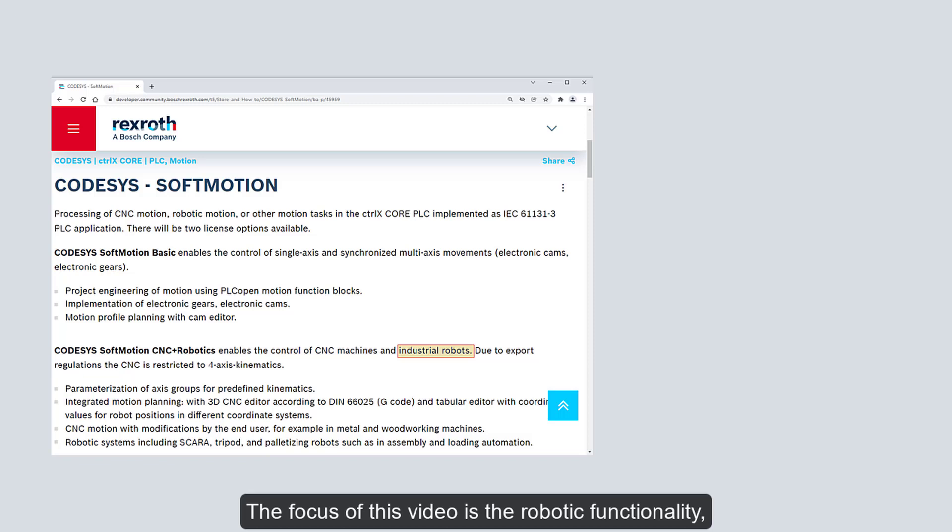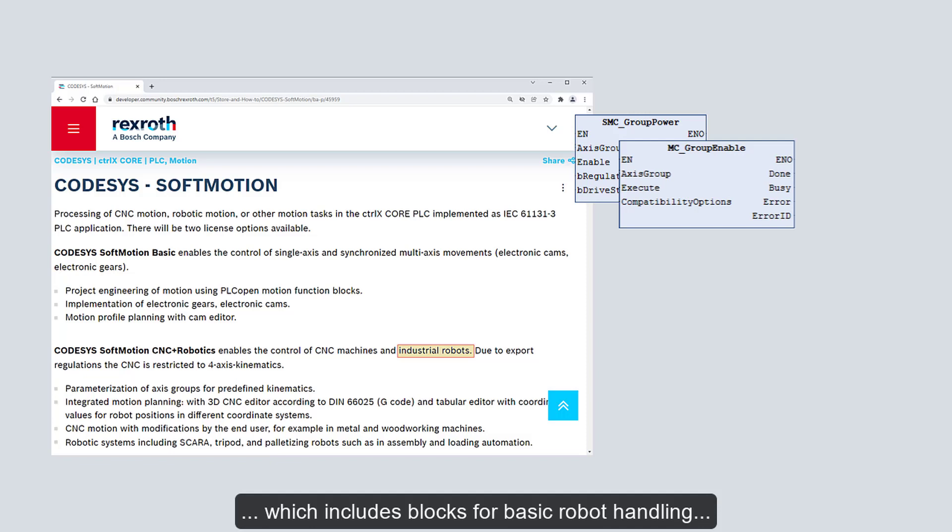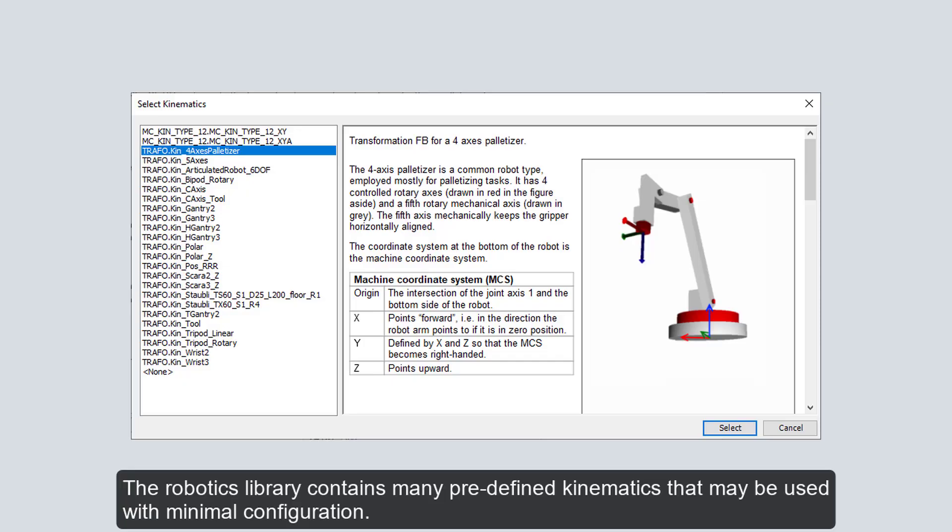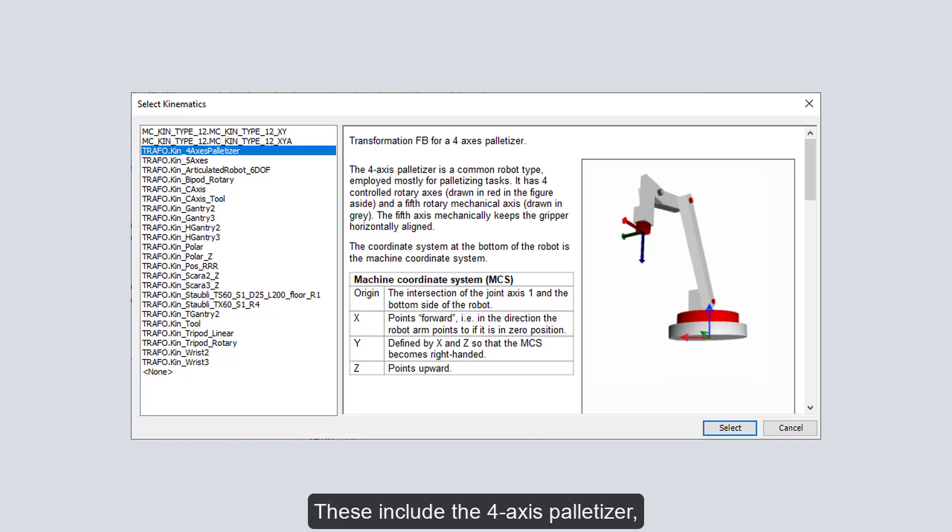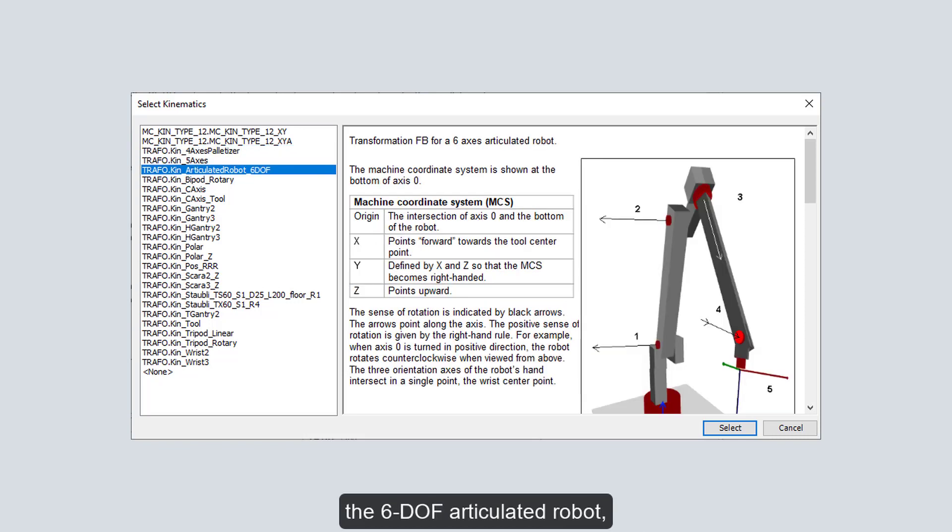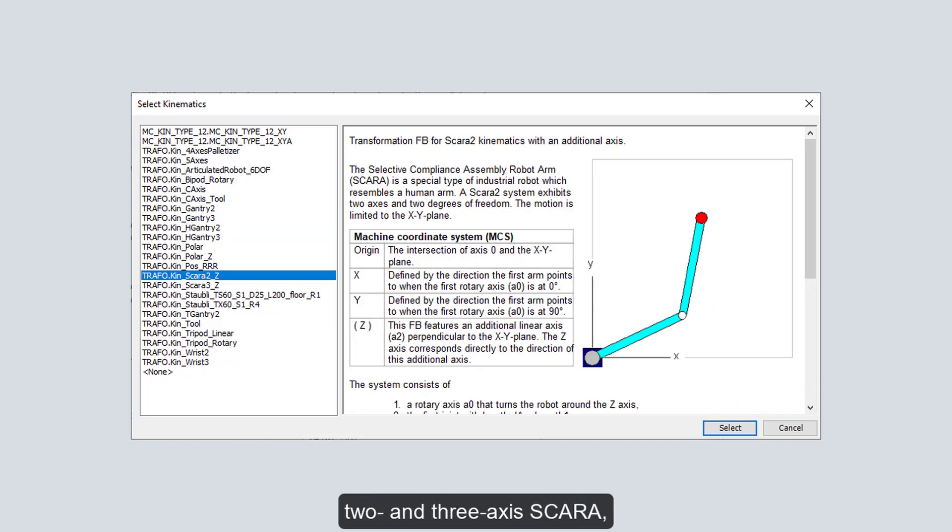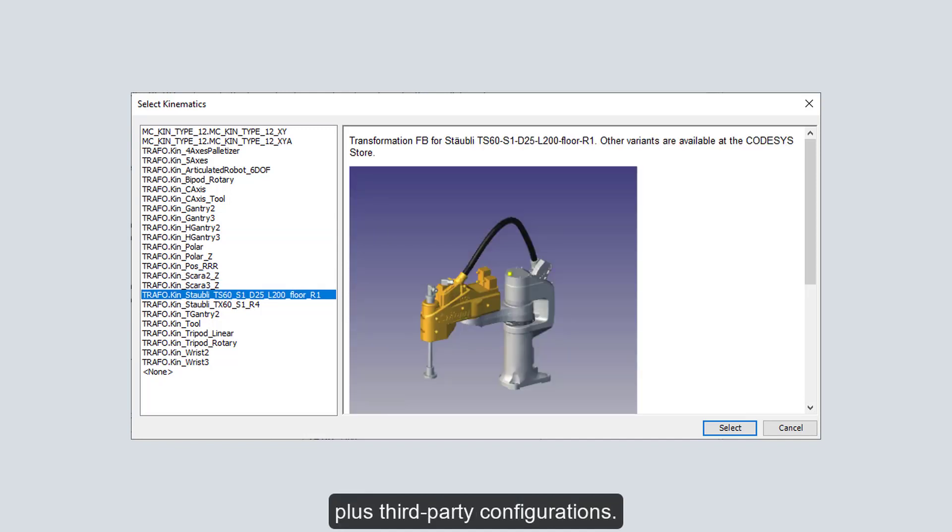The focus of this video is the robotic functionality, which includes blocks for basic robot handling and coordinated positioning of the axis groups. The robotics library contains many predefined kinematics that may be used with minimal configuration. These include the 4-axis palletizer, the 6-degree-of-freedom articulated robot, the 2-axis HBOT gantry, 2- and 3-axis SCARA, plus third-party configurations.